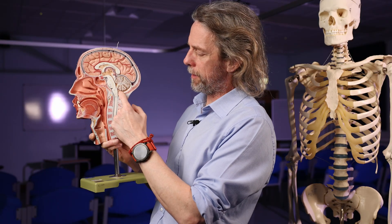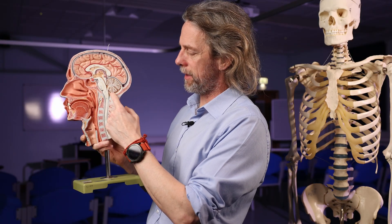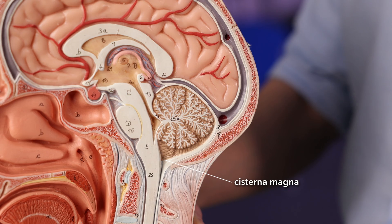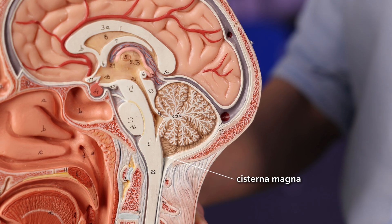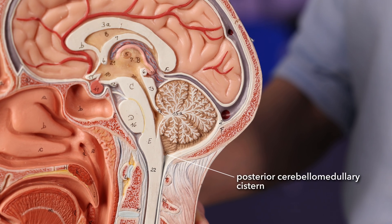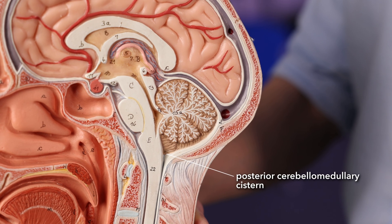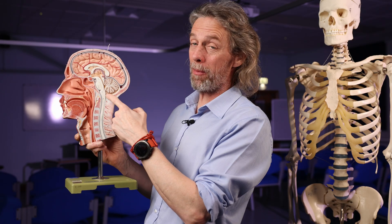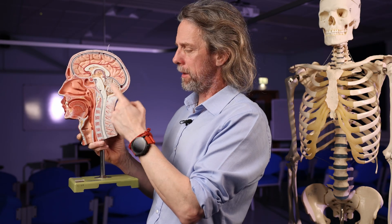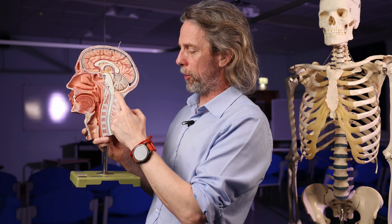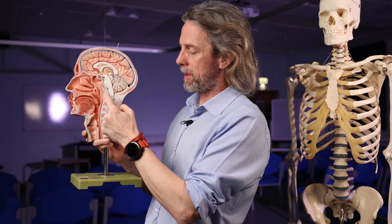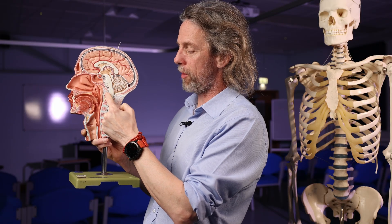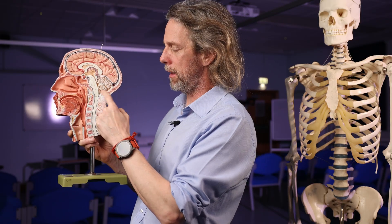Let's do the big one first. The big space down here is the cisterna magna, but we've got the medulla here and the cerebellum. This might also get called the cerebellomedullary cistern, and this specific bit might get called the posterior cerebellomedullary cistern. You've got to imagine this space continues in three dimensions around the medulla.